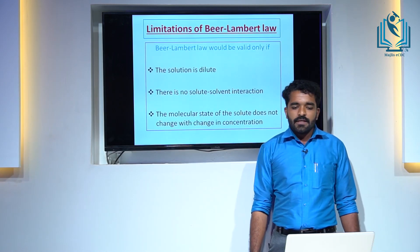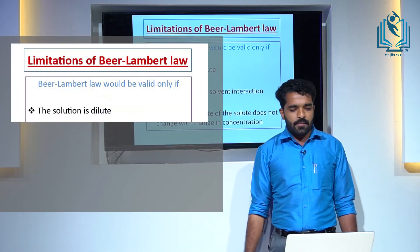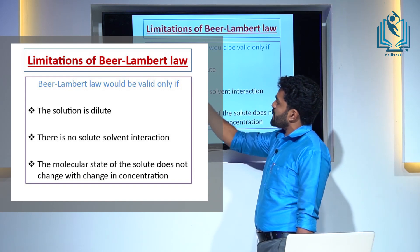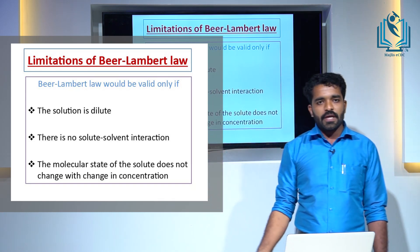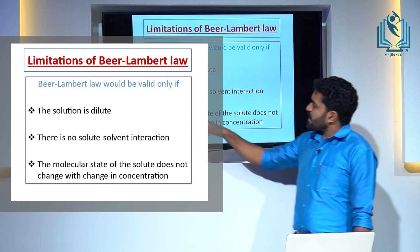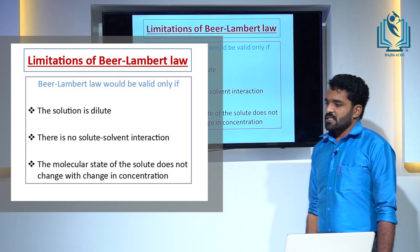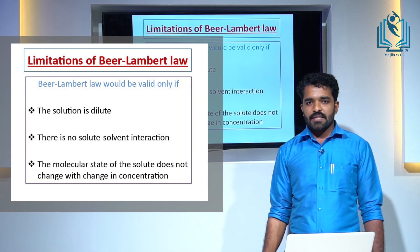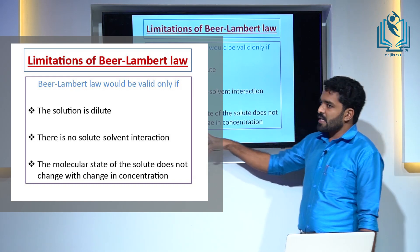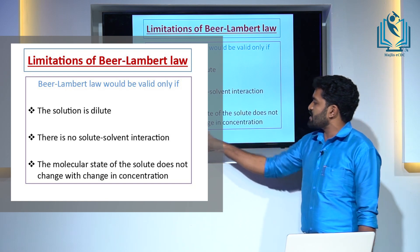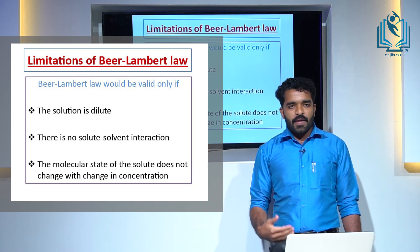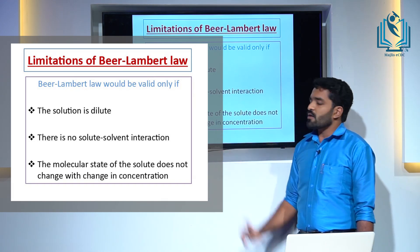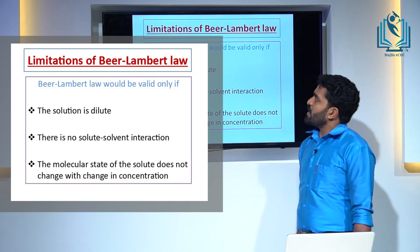Beer-Lambert Law has some limitations. First, the solution must be dilute; otherwise Beer-Lambert Law will deviate. Second, there must be no solute-solvent interaction — if there is any solute-solvent interaction, the result will be wrong. Third, the molar state of the solute does not change with the change in concentration. These three are the limitations of Beer-Lambert Law.